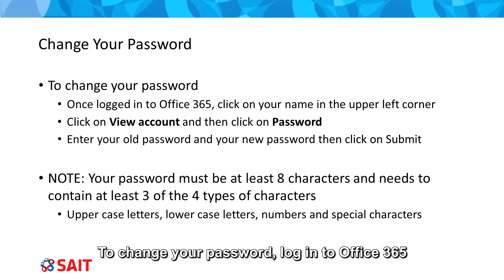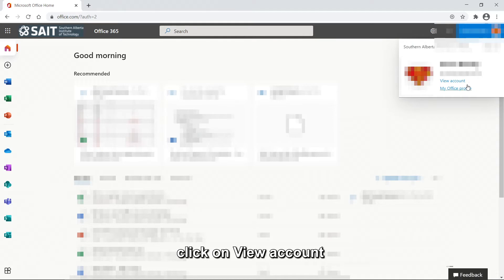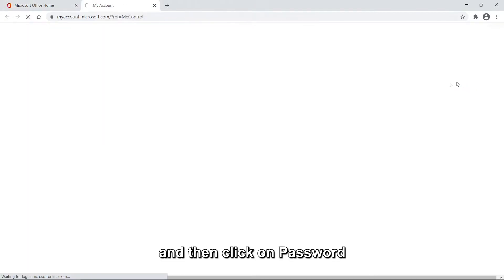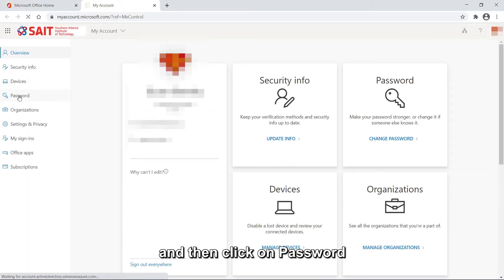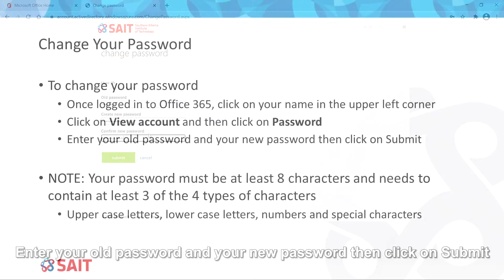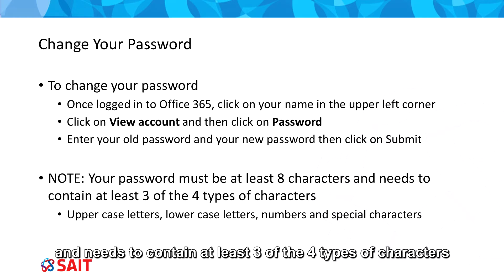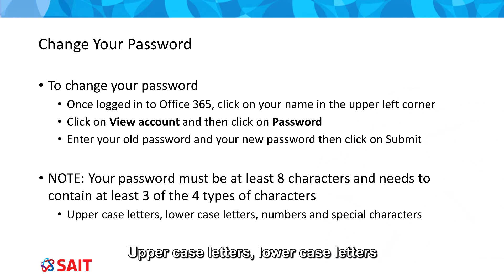To change your password, log in to Office 365. Click on your name in the upper right corner, click on View Account, and then click on Password. Enter your old password and your new password, then click Submit. Your new password must be at least eight characters long and needs to contain at least three of the four types of characters: uppercase letters, lowercase letters, numbers, and special characters.